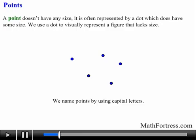We use a dot to visually represent a figure that lacks size. We usually name points by using capital letters. For example, the following five points are called point A, point B, point C, point D, and point E.